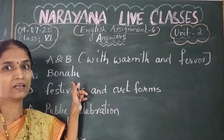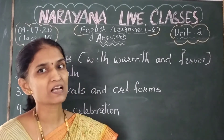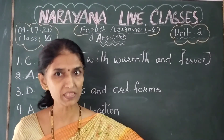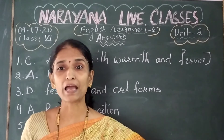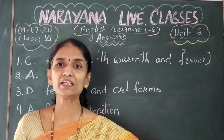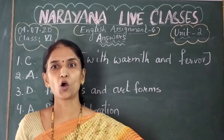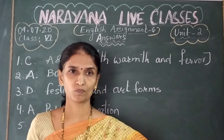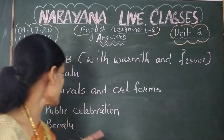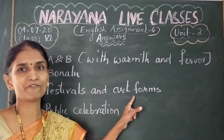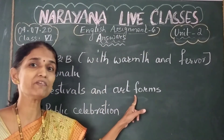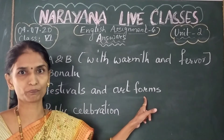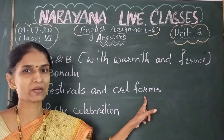The third question: Dash symbolizes our culture. Option A is Festivals, option B is Language, option C is Lifestyles, and option D is Festivals and Art Forms. The right option is D, that is Festivals and Art Forms. So our festivals and art forms symbolize our culture.